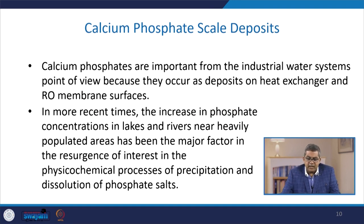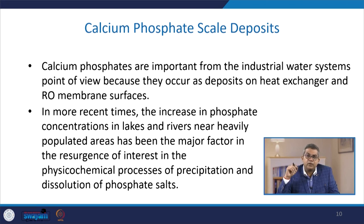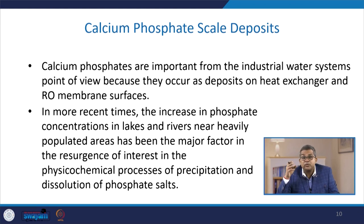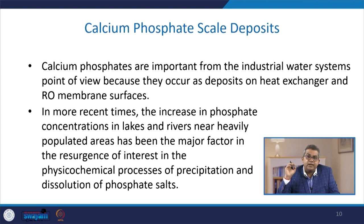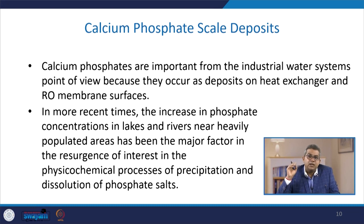Calcium phosphates are important from the industrial water system point of view because they occur as deposits on heat exchanger and reverse osmosis membrane surfaces, clogging the pores of RO membranes. In more recent times, the increase in phosphate concentration in lakes and rivers near heavily populated areas has been a major factor in renewed interest in physicochemical processes of precipitation and dissolution of phosphate salts.